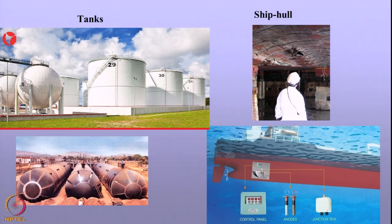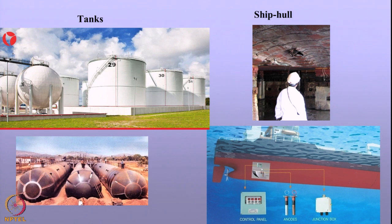Cathodic protection is also important in other areas such as tanks kept over the earth that are in contact with soil, and mounted bullets used for storing flammable gases or liquids safely. You also have corrosion of ship hulls and offshore structures. So, cathodic protection is very important over a range of structures, and we need to understand how effectively cathodic protection engineering can be implemented for all of them.